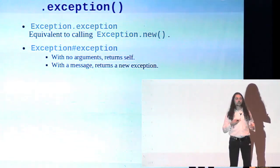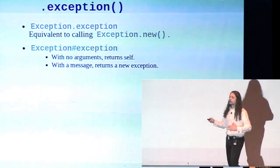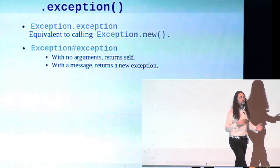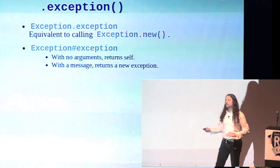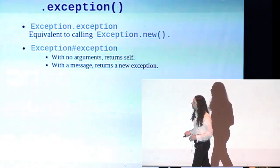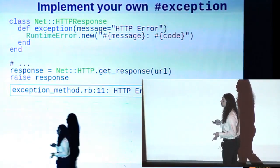It is the way Ruby gets an exception object from something else. And by default, it's only defined on the exception class, so you've got a class level version, which is equivalent to calling exception.new, and you've got an instance level which may return the same object or it may return a duplicate modified object, depending on how you call it. But that doesn't mean, just because that's the only place that Ruby defines it, doesn't mean we can't define our own.